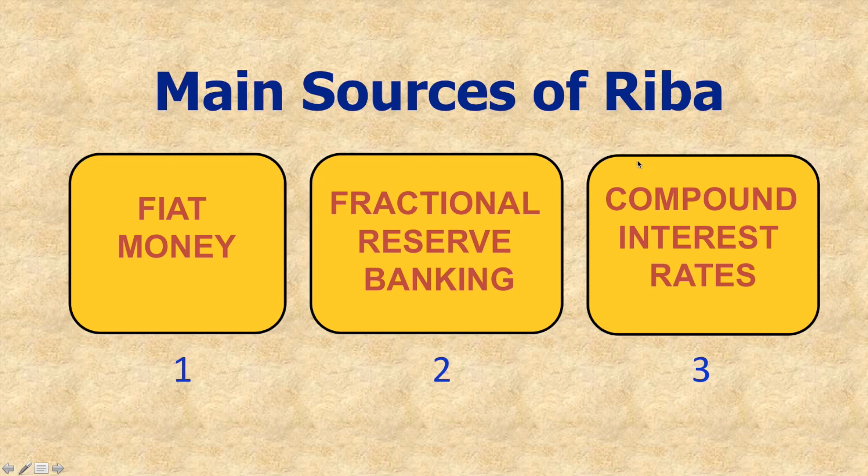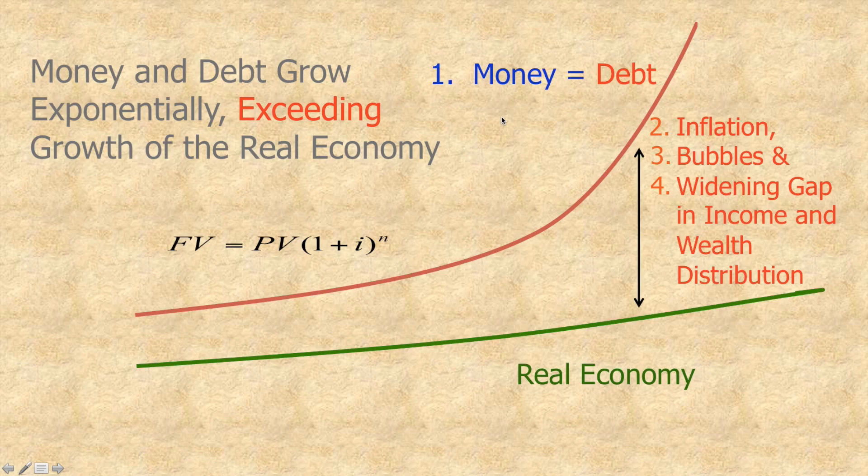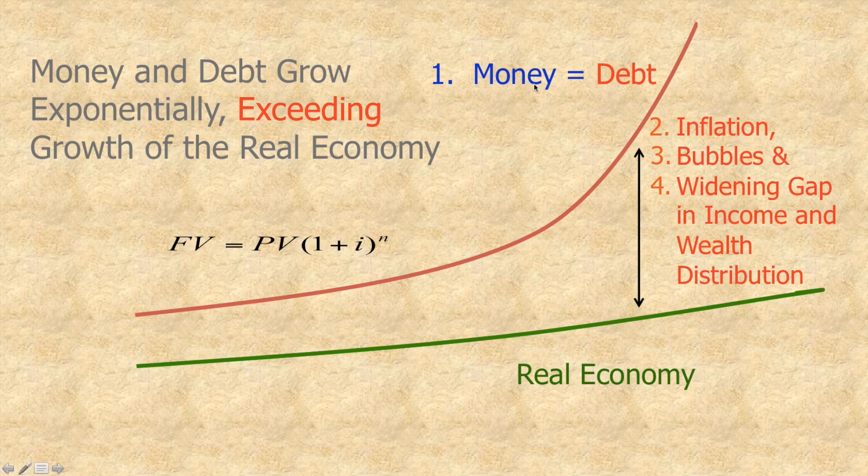banking and compound interest. These three bring about some effects. Firstly, money and debt in the economy grow exponentially beyond the real economy. Accordingly, that creates inflation that was covered in video 1, then it creates asset price bubbles